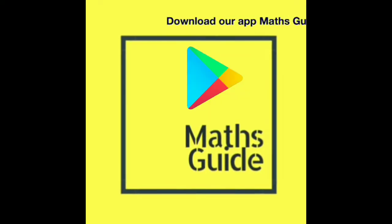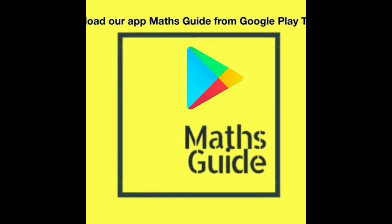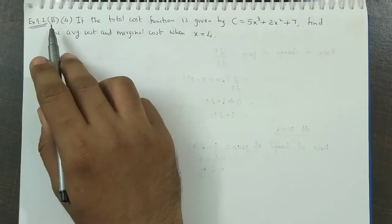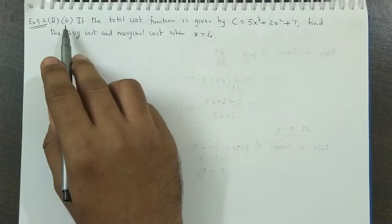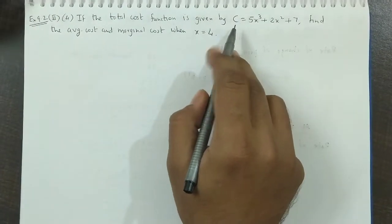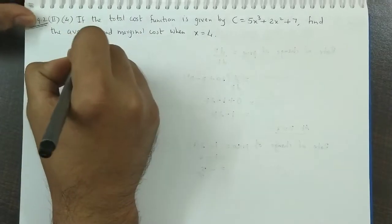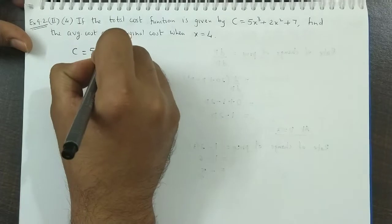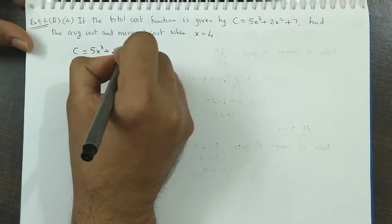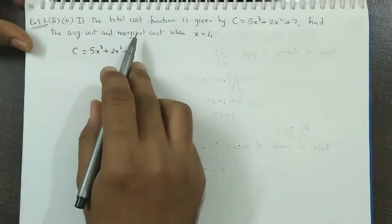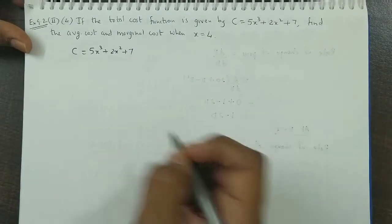Download the App MathsGuide from Google Play today. WBXS 9.2 question number 2 sub question number 4: If the total cost function is given by C = 5x³ + 2x² + 7, find the average cost and marginal cost when x = 4.